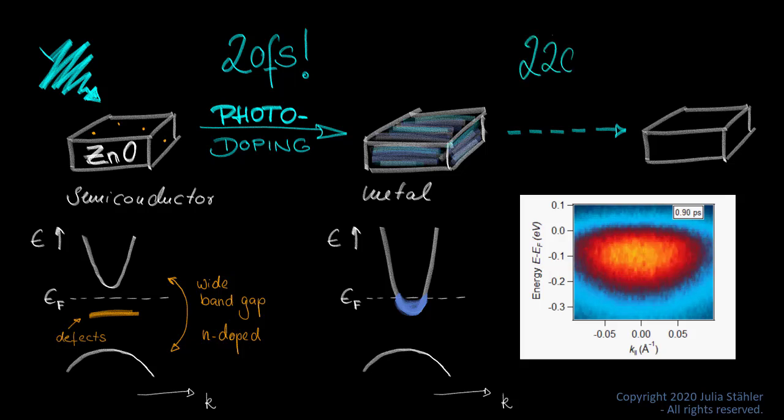Already after 220 picoseconds, the metal starts decaying. Electrons localize again. This is orders of magnitude faster than observed before.